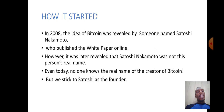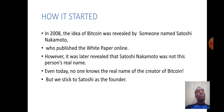How it started: in 2008, the idea of Bitcoin was revealed by someone named Satoshi Nakamoto, who published the white paper online. However, it was later revealed that Satoshi Nakamoto was not this person's real name. Even today, no one knows the real name of the creator of Bitcoin, but we still stick to Satoshi Nakamoto as the founder.